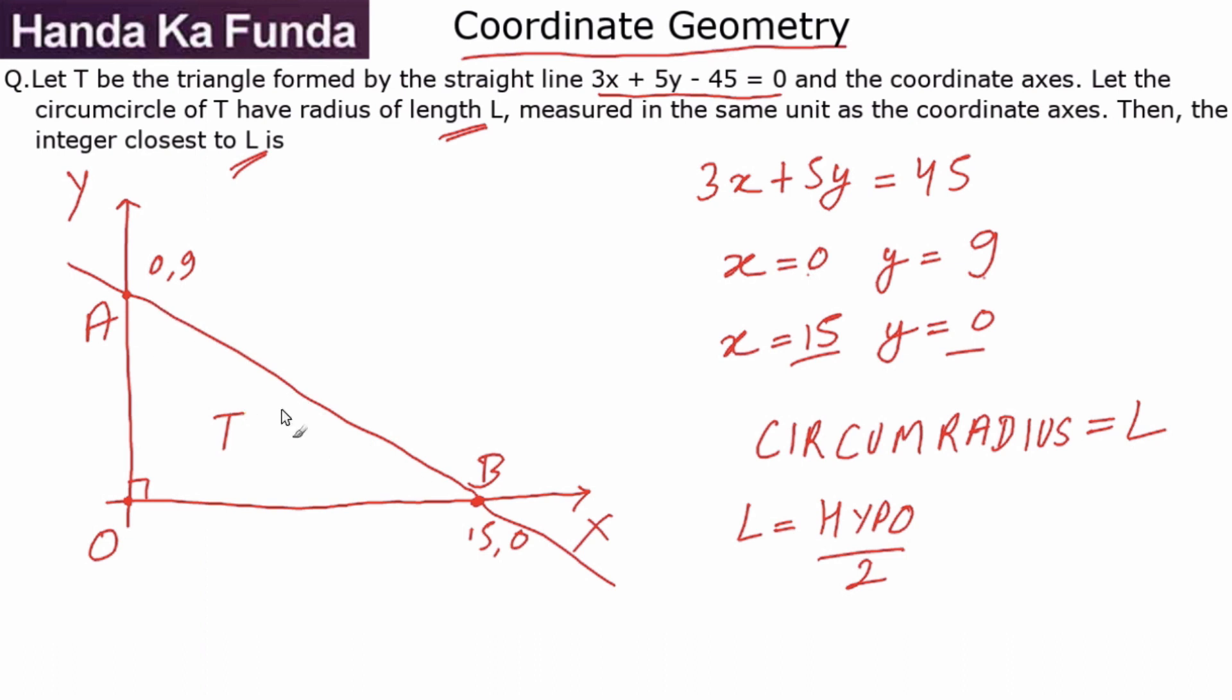So all I need to do in this question is find out the hypotenuse AB and divide it by 2. One side is 9, one side is 15, so the hypotenuse that we were looking for will be root of 15 square plus 9 square.